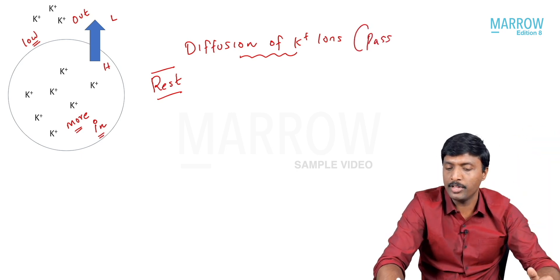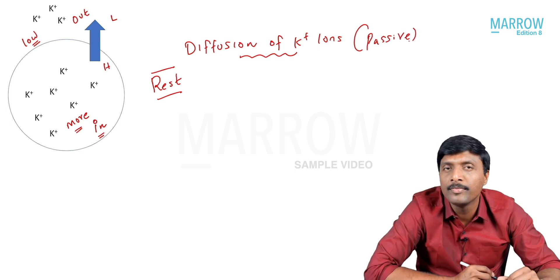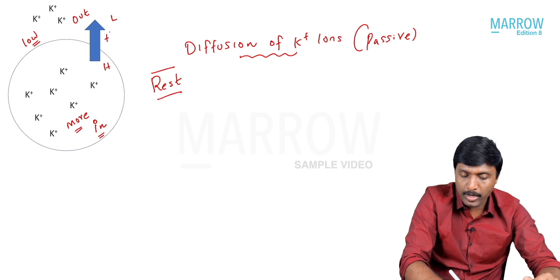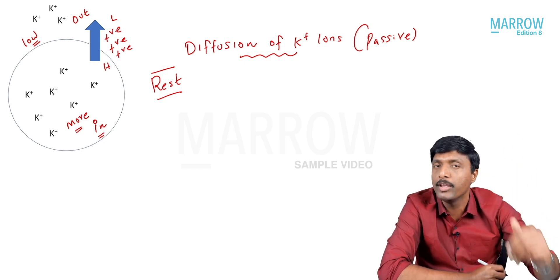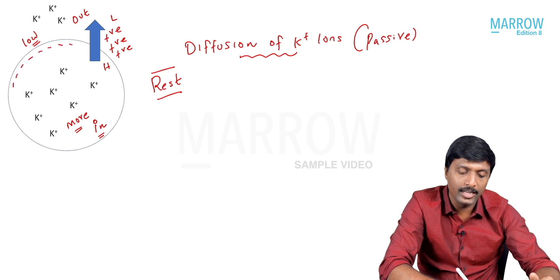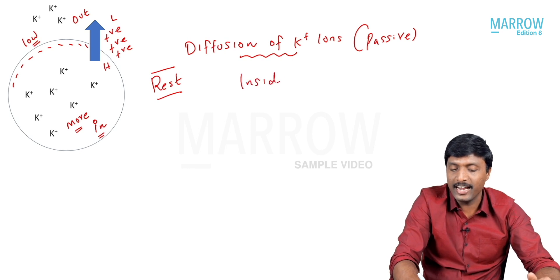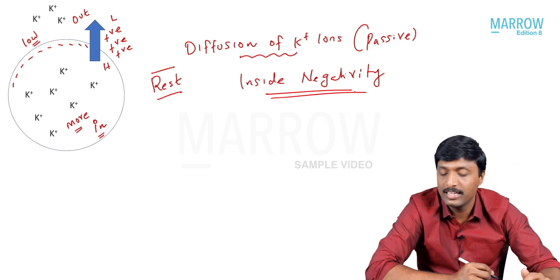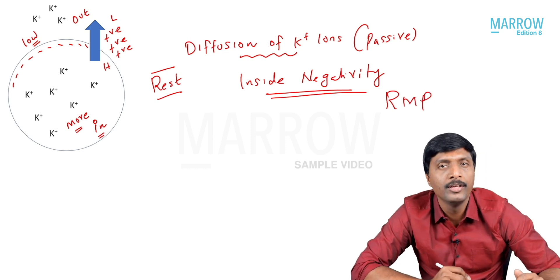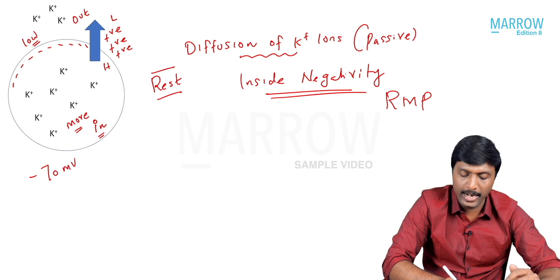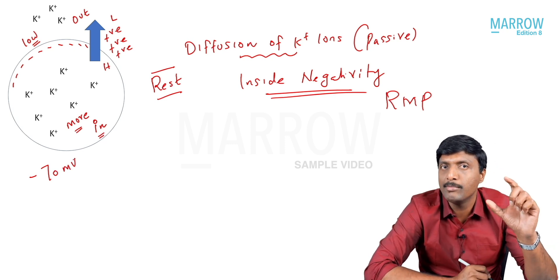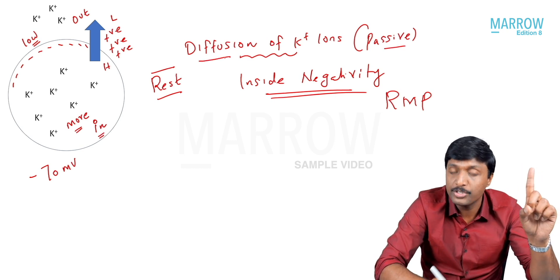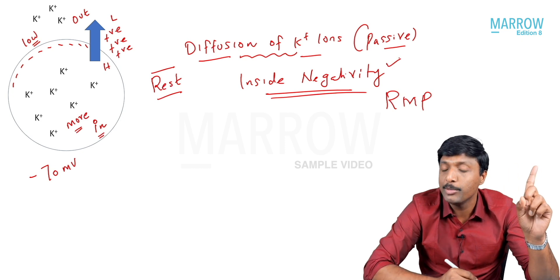There is no need for ATP for this process, that is why it is considered a passive process. The most important logic: potassium, once moving out, carries a lot of positive charges outside. Because a lot of positive charges are moving out, the negativity accumulates inside. Potassium is positive and moving out, so negativity is not getting neutralized — negative charges accumulate inside. This inside negativity is our resting membrane potential. In a neuron, we all know this value is minus 70 millivolt.